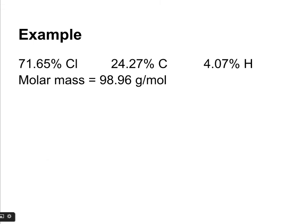So in this example, we've got something that's 71.65% chlorine, 24.27% carbon, and 4.07% hydrogen. Our first step is to treat these percentages like grams, and then we need to convert them to moles. So 71.65 grams of chlorine.